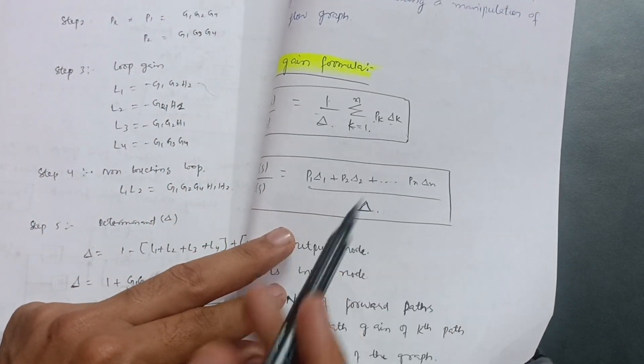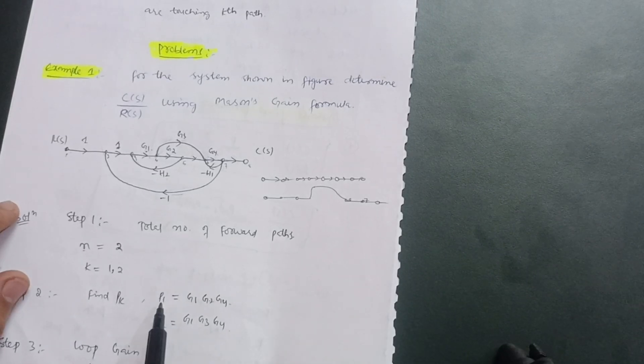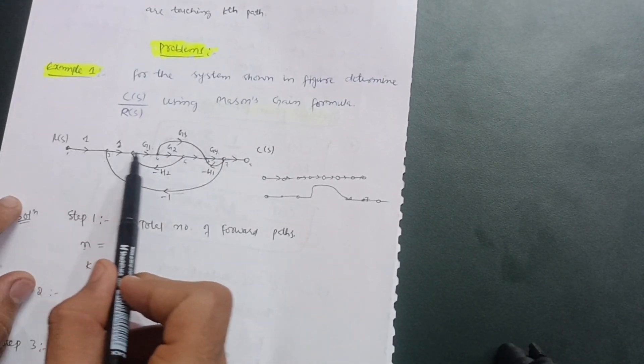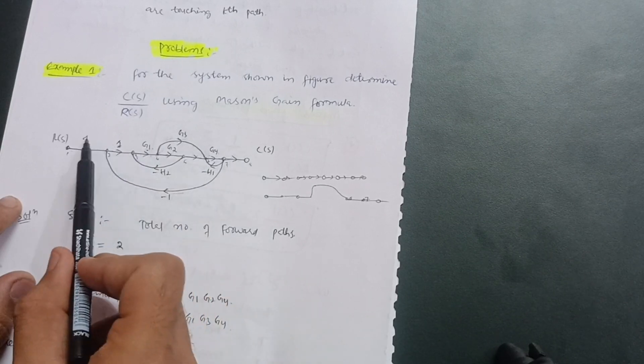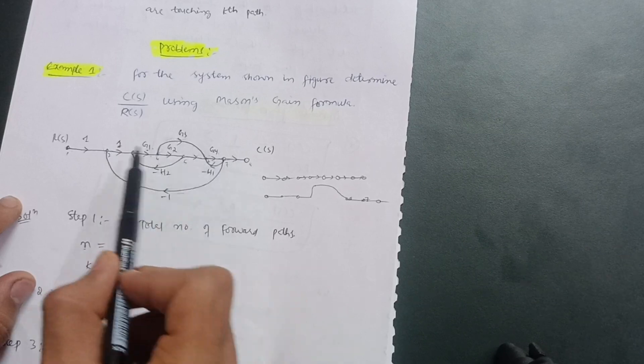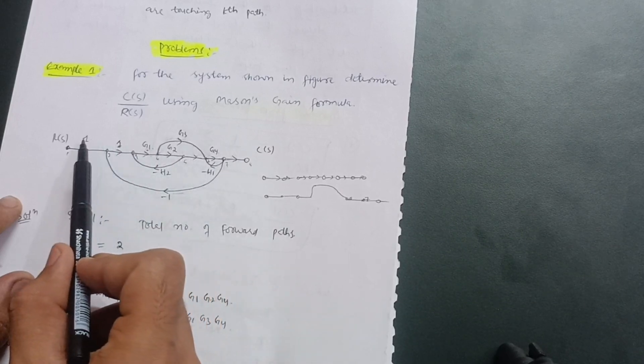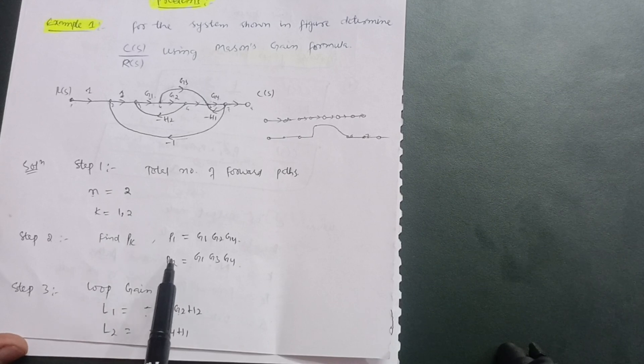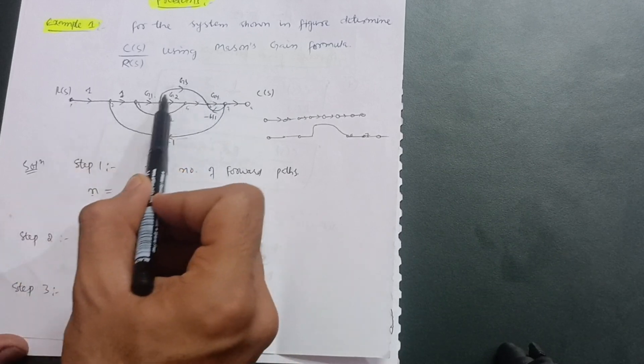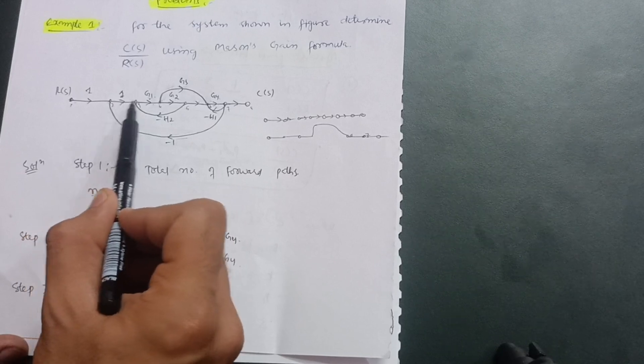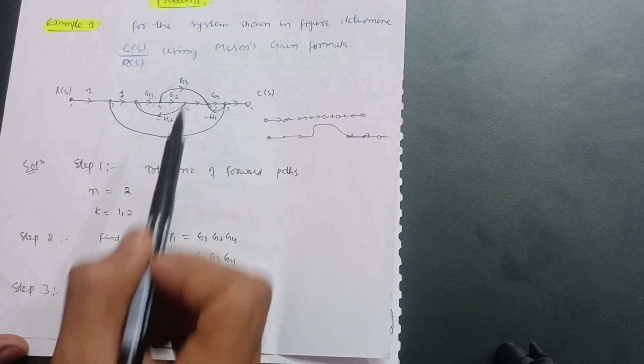Step 2: Find Pk, the path gain. P1 is the gain along path 1: G1 × G2 × G4 × 1 × 1 = G1·G2·G4. P2 is the gain along path 2: 1 × 1 × G1 × G3 × G4 = G1·G3·G4. So P1 = G1·G2·G4 and P2 = G1·G3·G4.